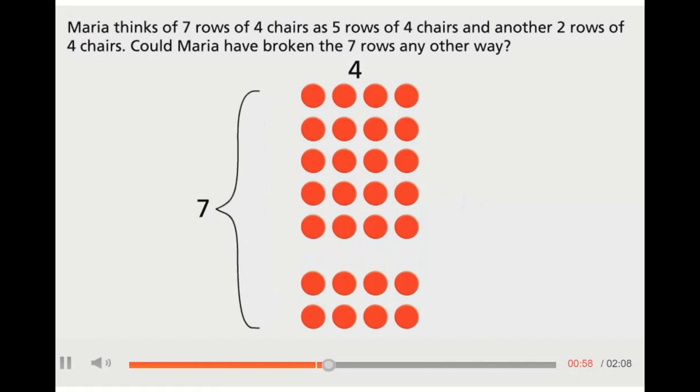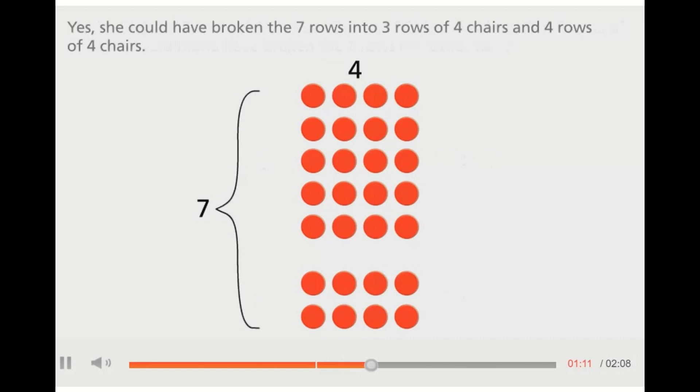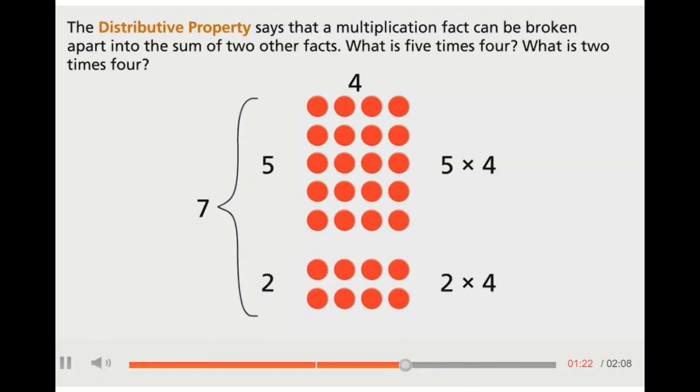Maria thinks of seven rows of four chairs as five rows of four chairs and another two rows of four chairs. Could Maria have broken the seven rows any other way? Yes, she could have broken the seven rows into three rows of four chairs and four rows of four chairs. The distributive property says that a multiplication fact can be broken apart into the sum of two other facts.